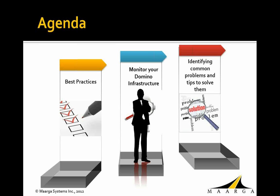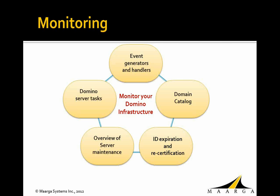There is also an option in fault recovery to notify you in the case of a crash and automatic recovery, so you won't miss any crash event. Now we've seen some of the best practices every Domino infrastructure should employ. Next we'll look at the monitoring aspects of your Domino infrastructure — things like event generator and handlers, domain catalog, ID expiration and recertification, overview of server maintenance, and some of the Domino tasks running on the server.